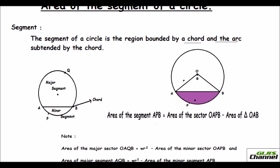To find the shaded portion — segment APB — first find the area of sector OAPB. We already know how to find the area of the sector. When you find the area of the sector, you get the area of that whole portion. From that, if you subtract triangle AOB, you are left with segment APB.